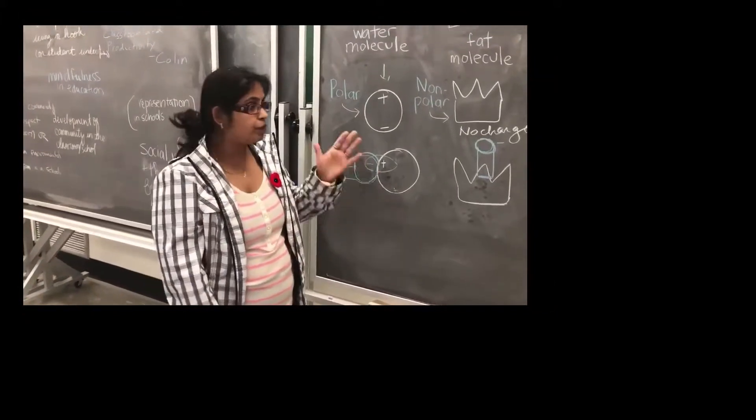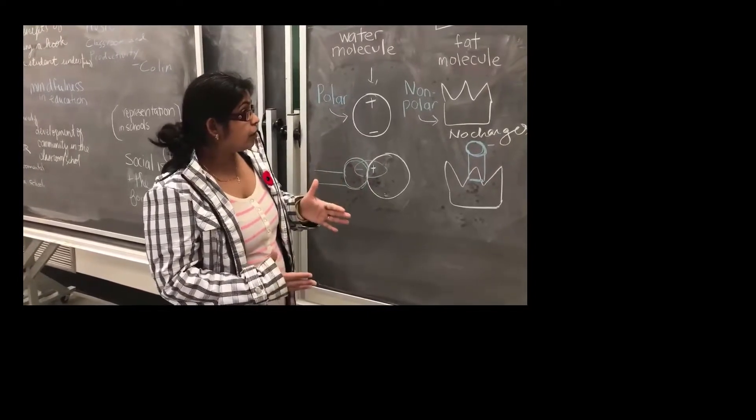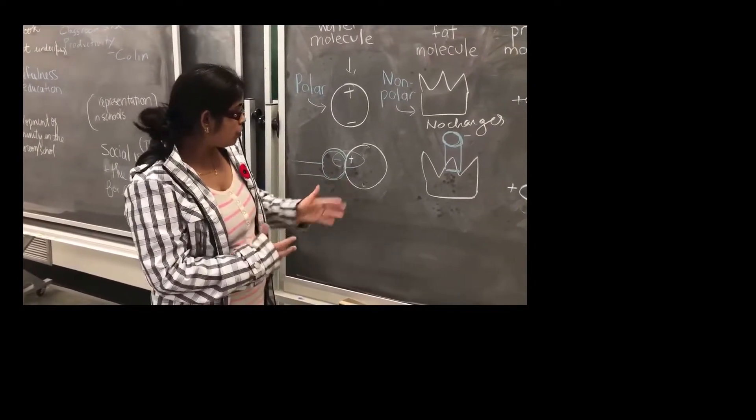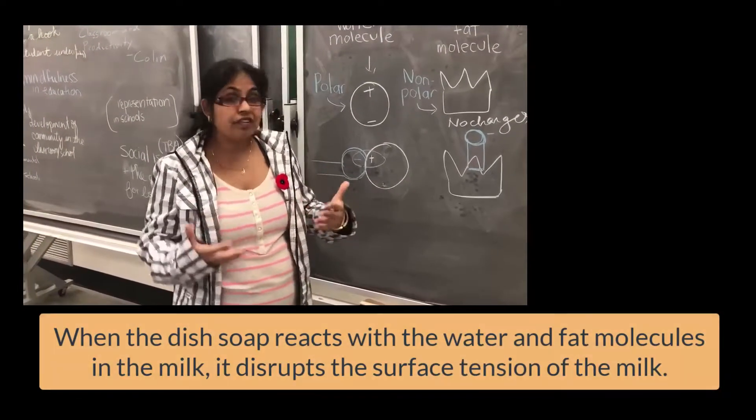When we put the detergent molecule on the surface of the milk, non-polar molecules attach with the polar molecules and polar molecule attach with the non-polar molecules and it disrupts the surface tension.